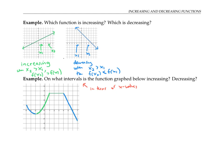To describe where this function is decreasing: that's for x values between negative four and negative two, and between four and seven. I can write this using inequalities as −4 < x < −2 and 4 < x < 7.